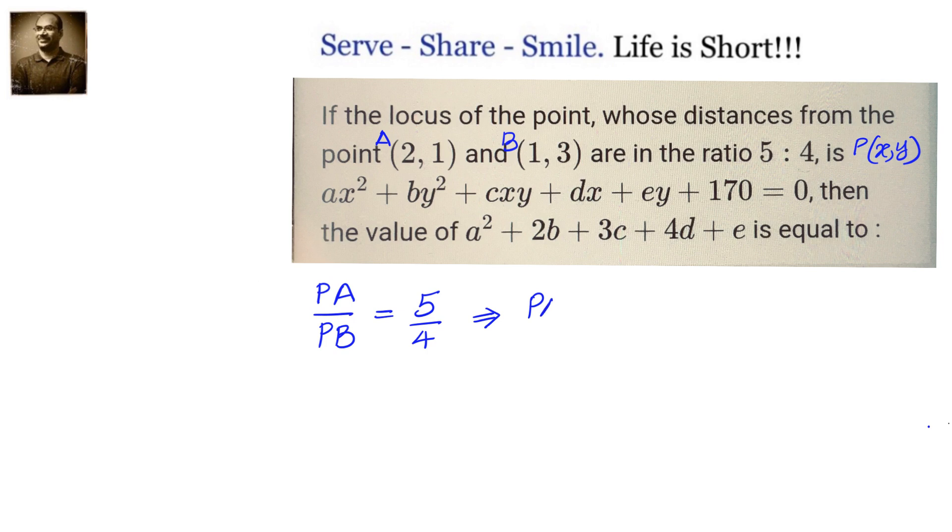Let us square both sides because the distance formula has a square root we want to avoid. So PA²/PB² = 25/16, or 16PA² = 25PB².